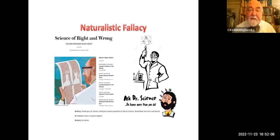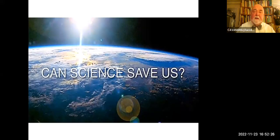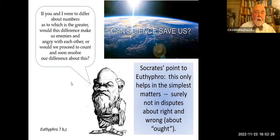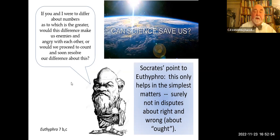Beware the naturalistic fallacy. An ought-statement can never be derived from an is-statement. Thus no amount of science is ever going to tell us what to do in ethics, which broadly includes such things as religion, politics, and political administration. Can science save us? Well, Socrates makes an interesting comment in Plato's dialogue Euthyphro to the character Euthyphro: 'If you and I were to differ about numbers as to which is greatest, would this difference make us enemies and angry with each other, or would we proceed to count and soon resolve our difference?' Euthyphro's point is that counting only helps in the simplest matters, but surely not in speech about right and wrong, about what we ought to do. Those are the ones we get really engaged in, and indeed sometimes make enemies over.